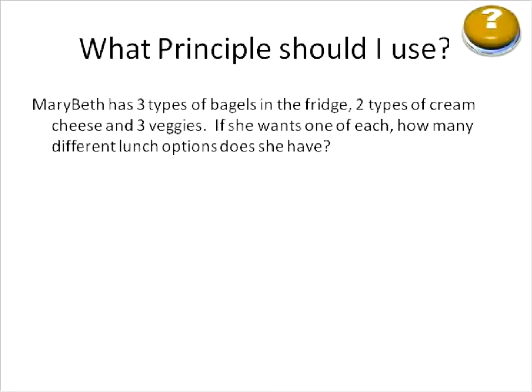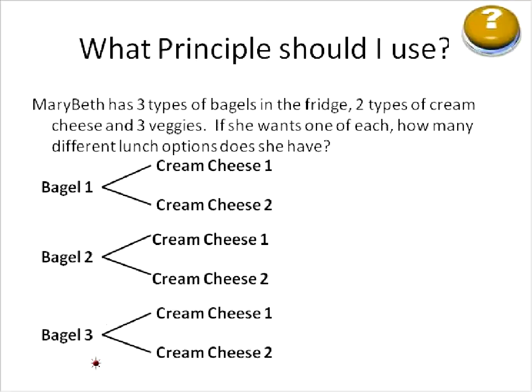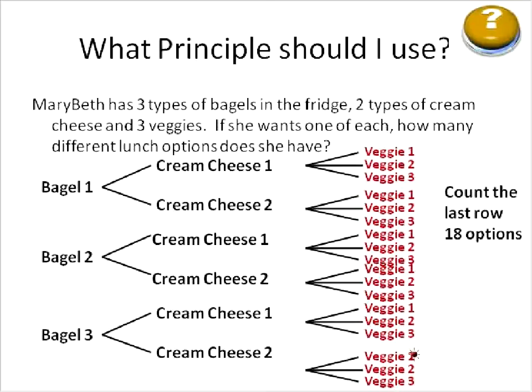Let's look at this one. Mary Beth has three types of bagels in the fridge, two types of cream cheese, and three veggies. If she wants one of each item, how many different lunch options does she have? This question uses the product principle. We can solve it in two ways — one is to write out a chart: write a bagel, a different type of cream cheese, and three different types of veggies, then count all the options.